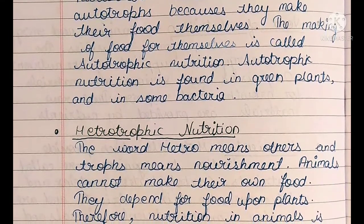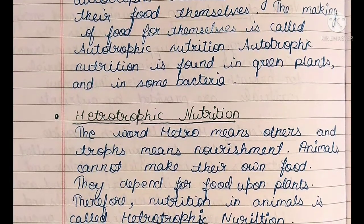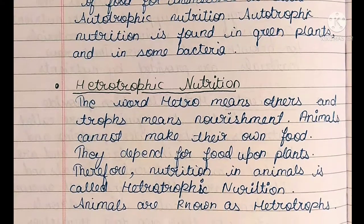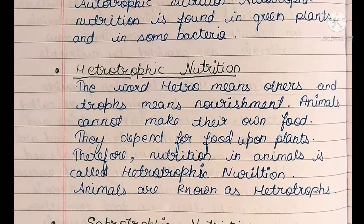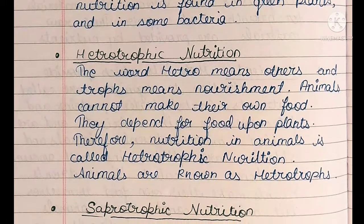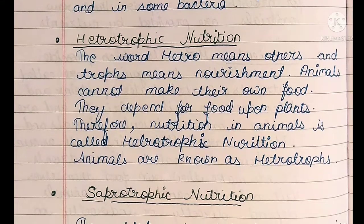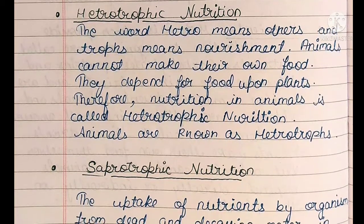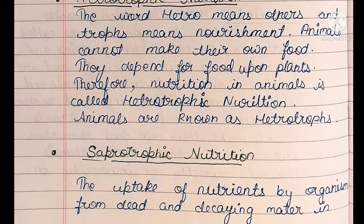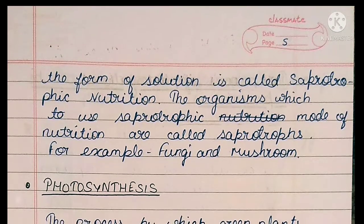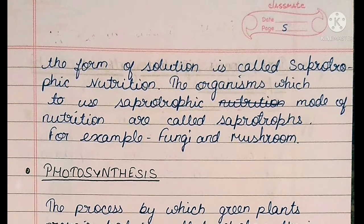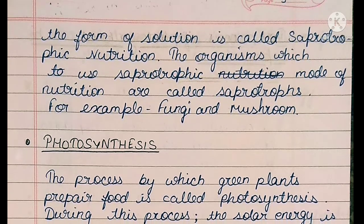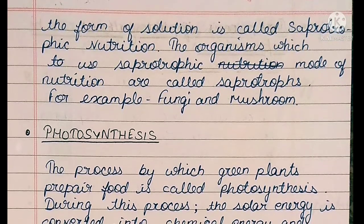Heterotrophic nutrition: The word 'hetero' means other and 'trophe' means nourishment. Animals can't make their own food; they depend on plants for food. Therefore, nutrition in animals is called heterotrophic nutrition, and animals are known as heterotrophs. Saprotrophic nutrition: The uptake of nutrition by organisms from dead and decaying matter in the form of solution is called saprotrophic nutrition. Organisms which use this mode are called saprotrophs — for example, fungi and mushroom.